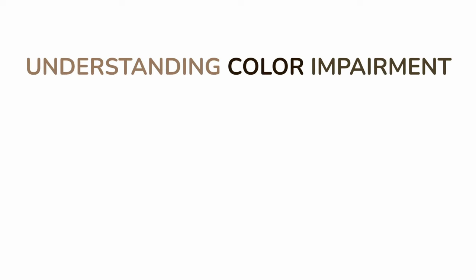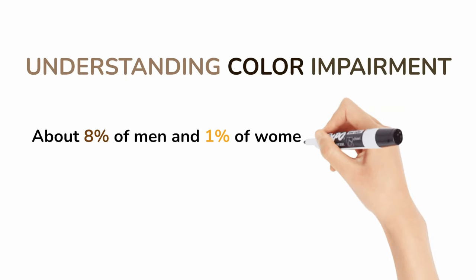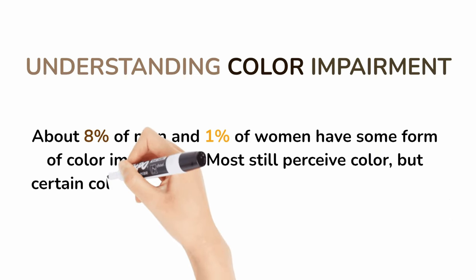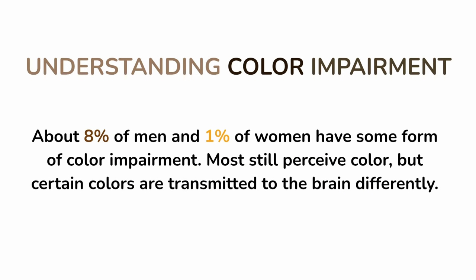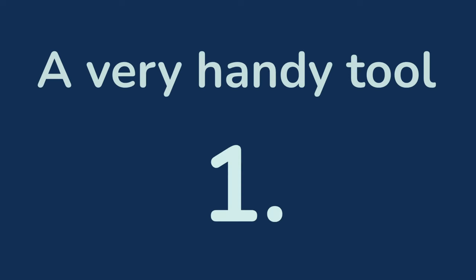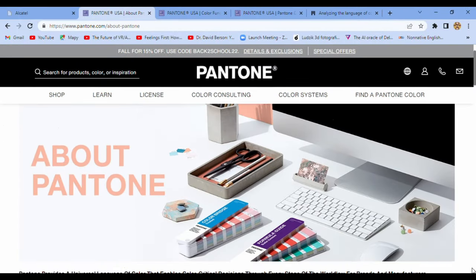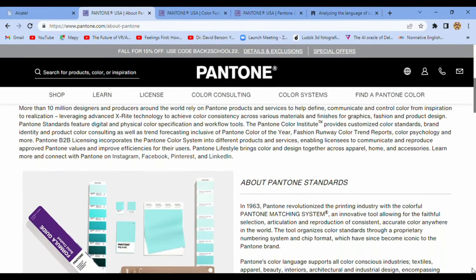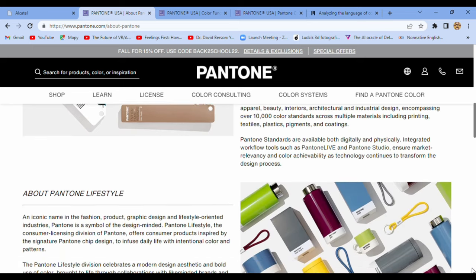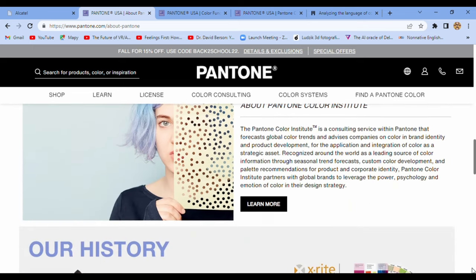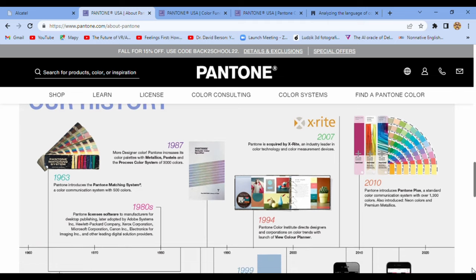Understanding color impairment: about 8% of men and 1% of women have some form of color impairment. Most still perceive color, but certain colors are transmitted to the brain differently. A very handy tool is the Pantone Color Institute — everything about color. They try to analyze color and how to work with it.